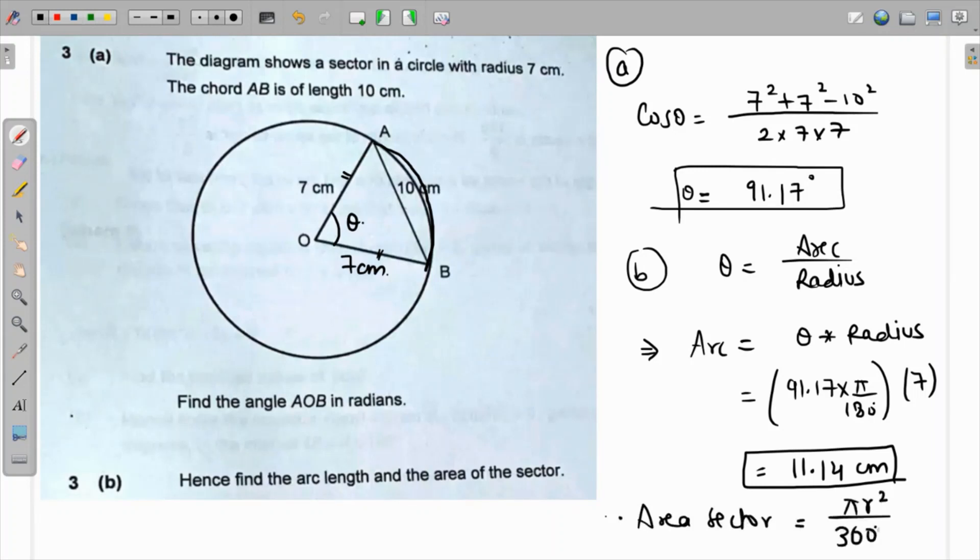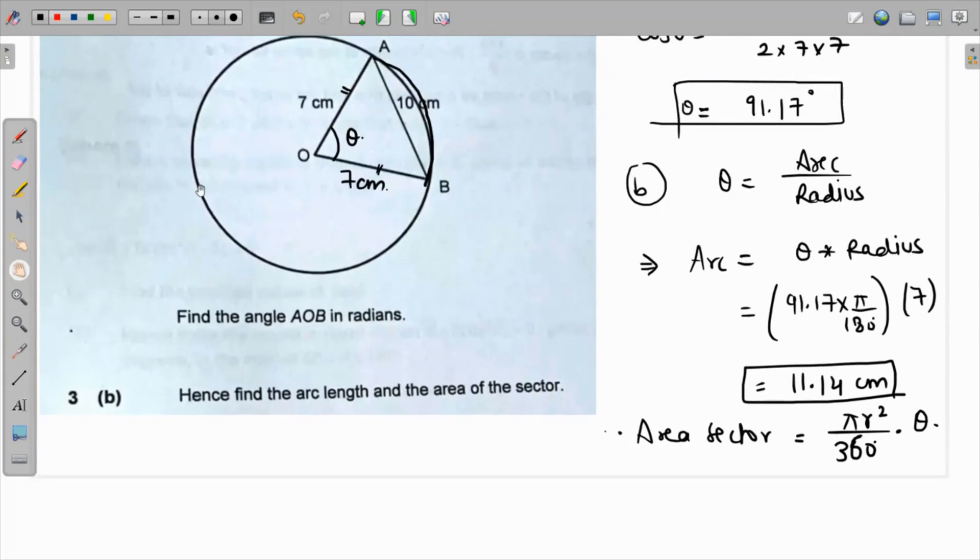πr² is the area of the complete circle, 360 is the angle made by the circle, times the angle made by the sector which is theta. We already have the value of theta, so that is π times 7² over 360 times 91.17.